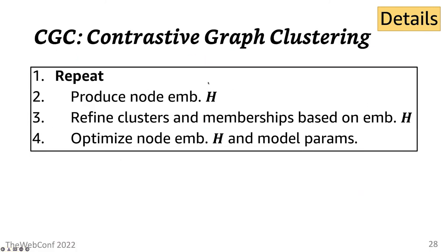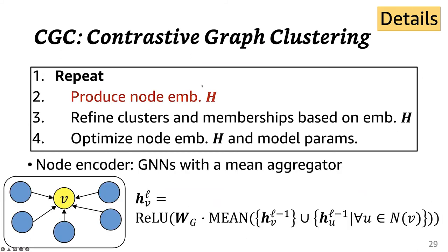This algorithm shows how CGC operates by repeatedly performing three simple steps. First, given the current model parameters, we produce node embeddings H where we adopted a widely used graph neural networks with a mean aggregator as the node encoder. Then we apply clustering algorithms such as k-means to the current node embeddings and obtain refined clusters and cluster memberships.